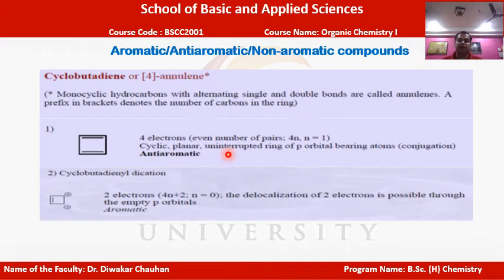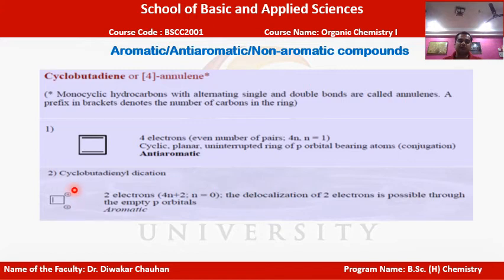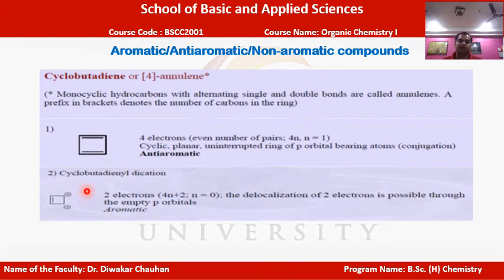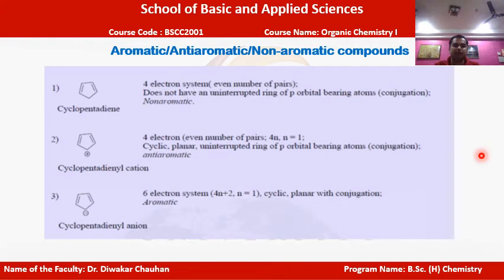Cyclobutadiene dication has only one pi bond giving two pi electrons. Applying 4n+2 gives n=0, so it follows Hückel's rule. The two positive charges at corners of the ring allow delocalization of the two pi electrons over the entire ring, forming a continuous pi electron cloud. Since it is cyclic, planar, and follows the 4n+2 rule, cyclobutadiene dication is aromatic.